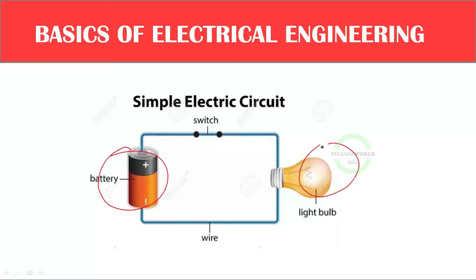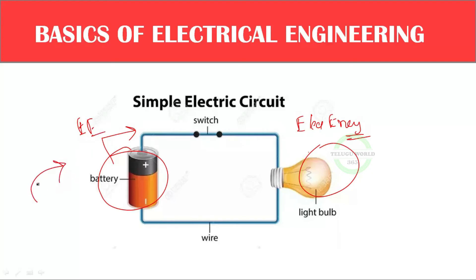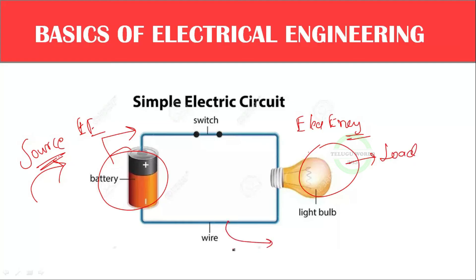In a simple electric circuit, the battery delivers energy which is converted in the bulb. The electrical energy gets converted by the load. So we can identify three components: the source, the load, and the conductor.